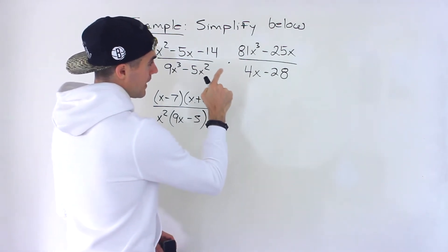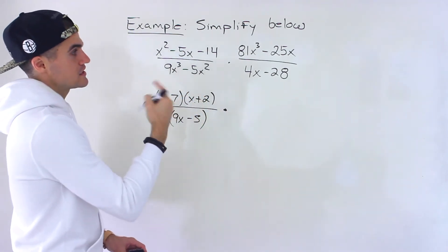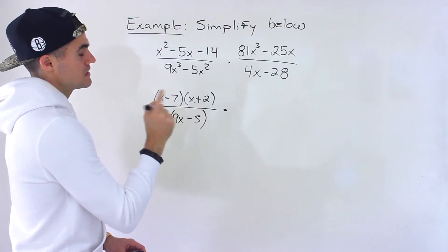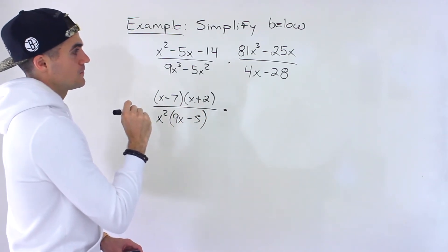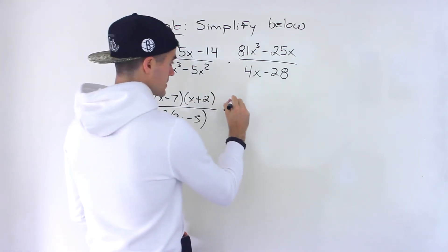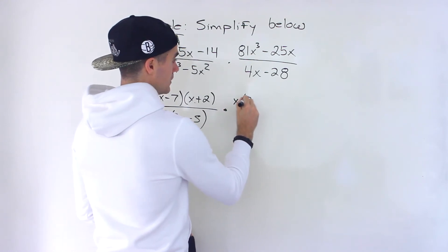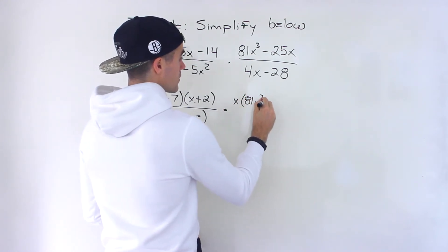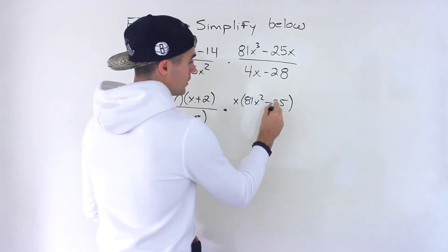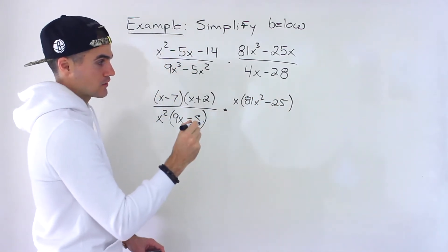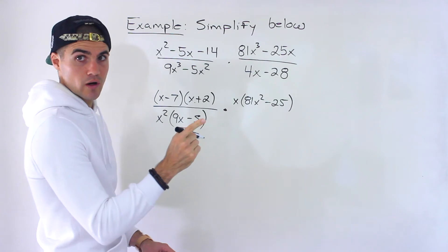And then over here, we have 81x cubed minus 25x. So notice in this case, what we could take out is first an x. And we'd be left with 81x squared minus 25. And then notice that 81x squared minus 25, that's a difference of squares, right?